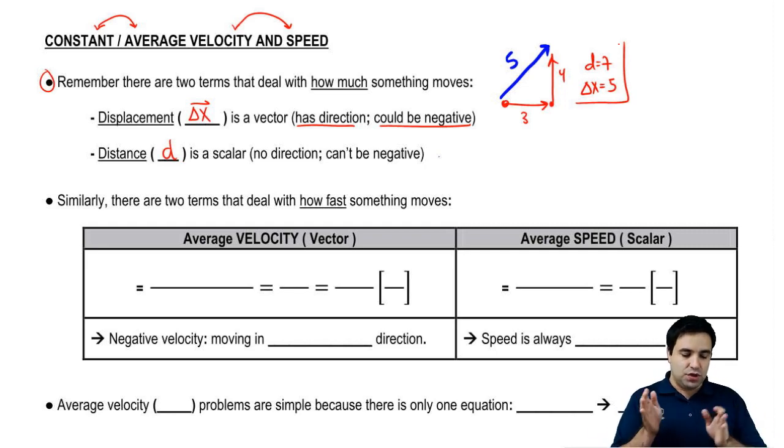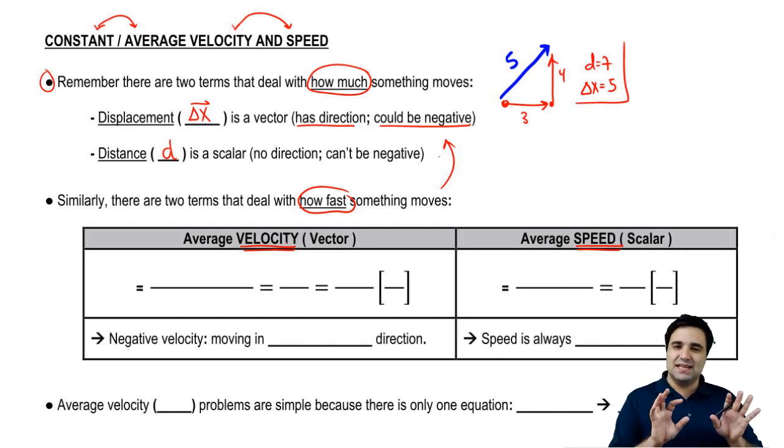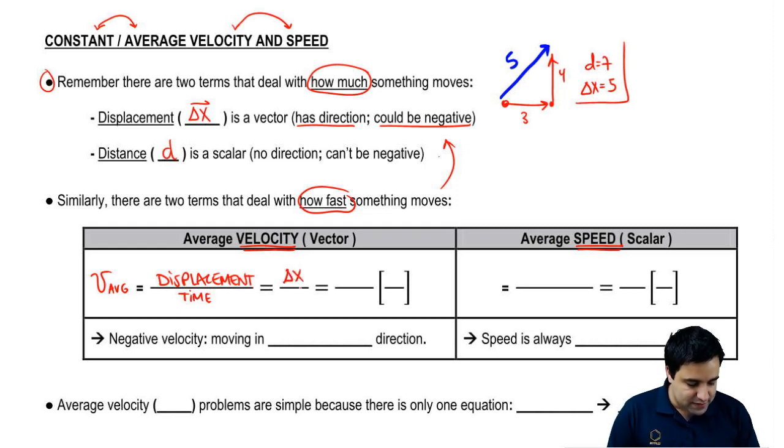Just like how there are two terms to deal with how much something moves, there's two terms to deal with how fast something moves, and it's analogous to this situation. The two terms are average velocity and speed. I'll talk about the average portion a little bit later. The difference between velocity and speed has to do with its definition, and this is kind of boring, but you have to know this really well.